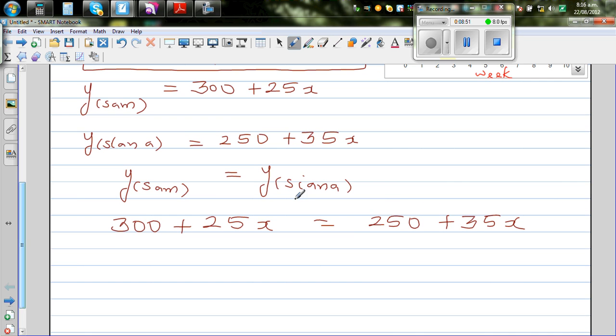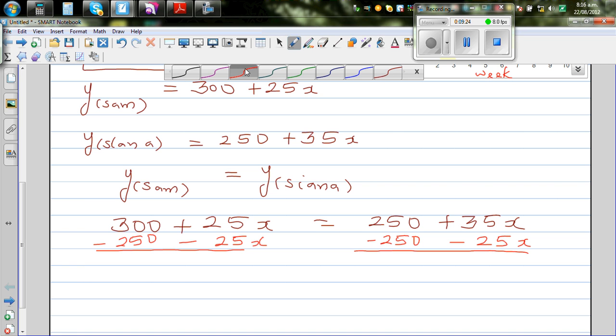The technique to solve this type of equation is to bring the x's on one side and the numbers on the other side. I'm going to take away 25x from both sides and 250 from both sides. So 300 minus 250 is 50, and 35x minus 25x is 10x. So 50 is equal to 10x.